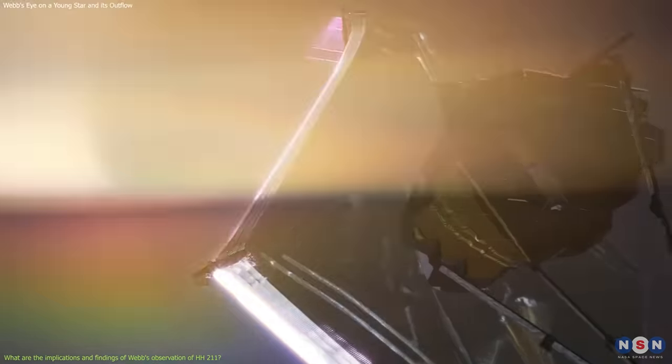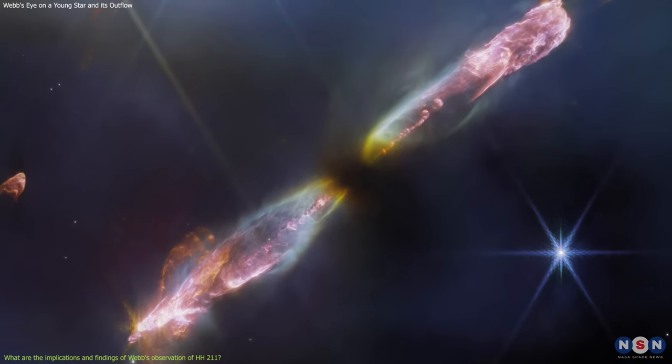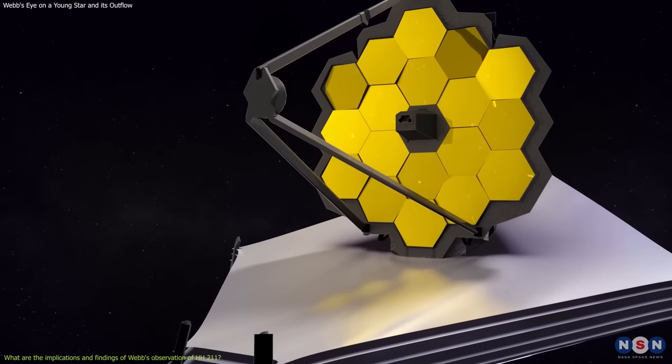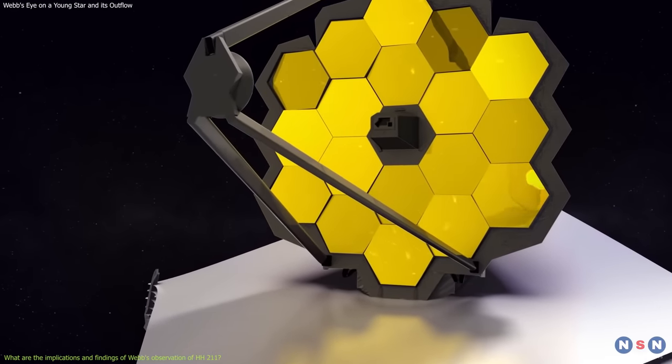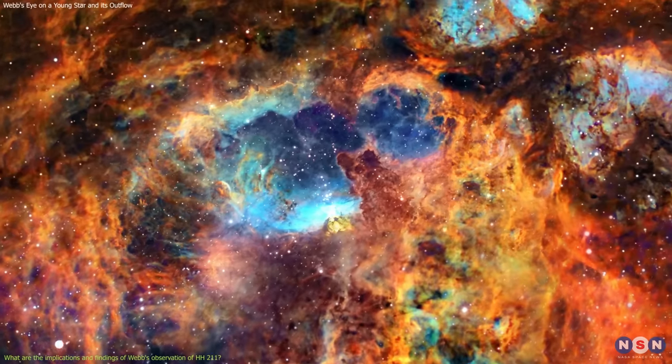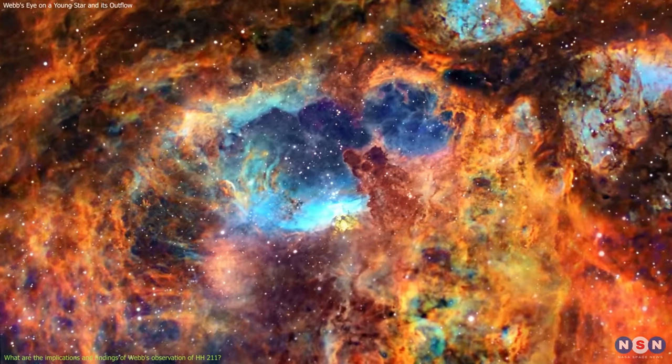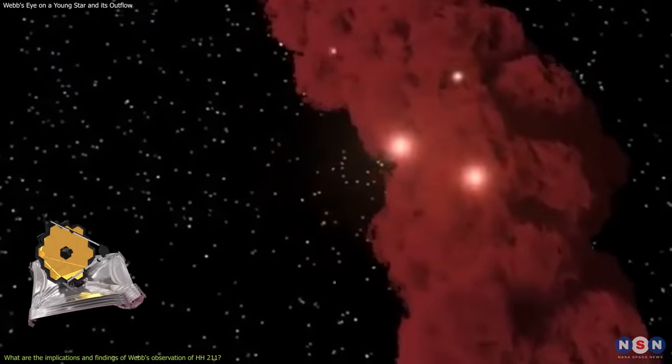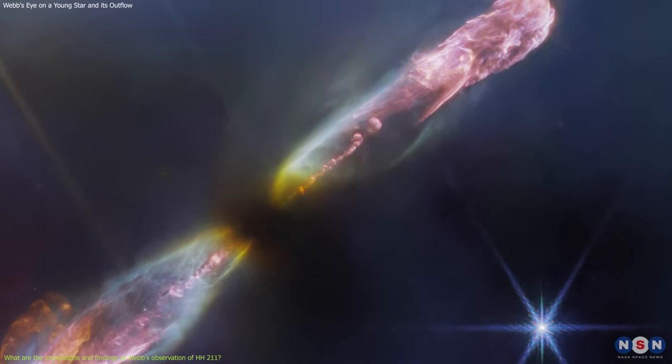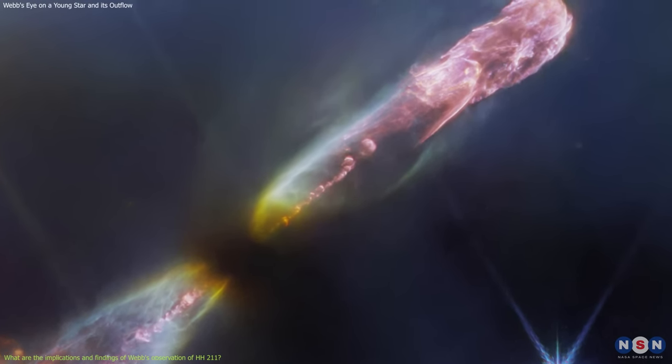How did Webb manage to capture such a stunning image of Herbig Haro 211? The answer lies in its unique capabilities as an infrared observatory. Infrared light is invisible to our eyes, but it can penetrate through dust and gas that block visible light. This allows Webb to see deeper into the molecular cloud, where Herbig Haro 211 is hidden, and reveal its outflow in all its glory.